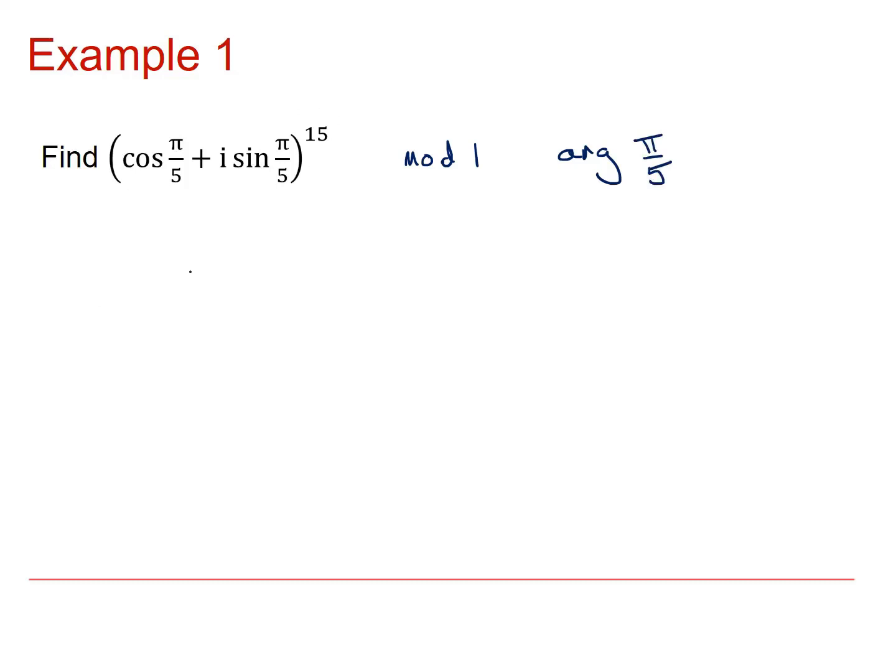If I do this to the power of 15, I'm still going to get a modulus of 1, but my argument is going to be multiplied by 15. So I get 15 times pi by 5, and i sine, and again 15 times pi by 5.